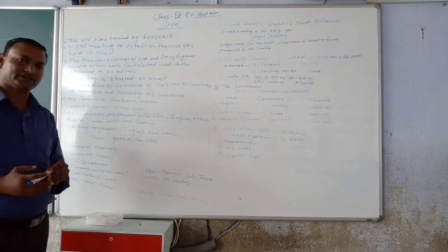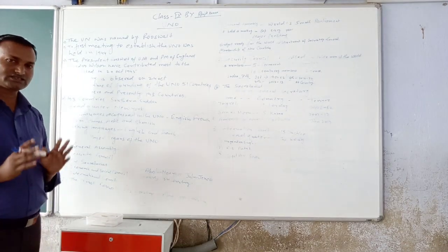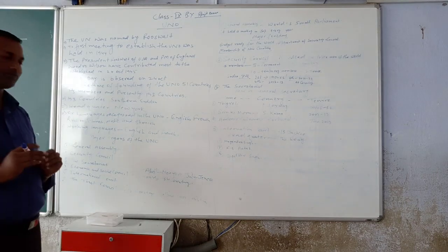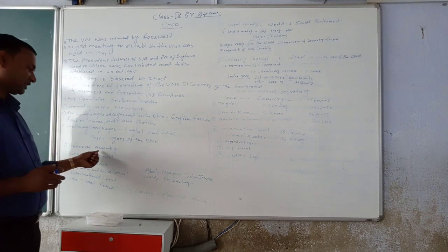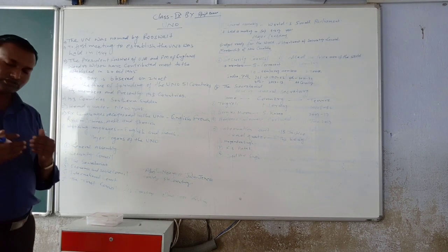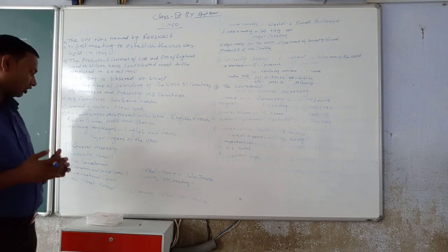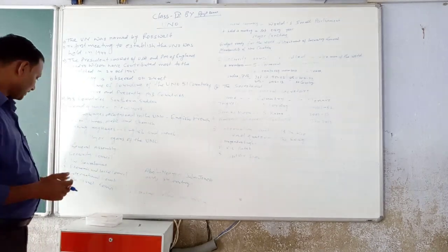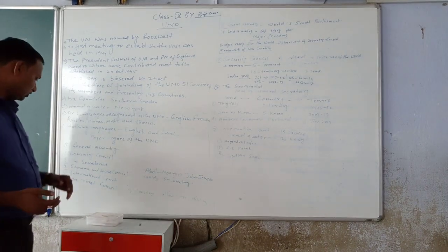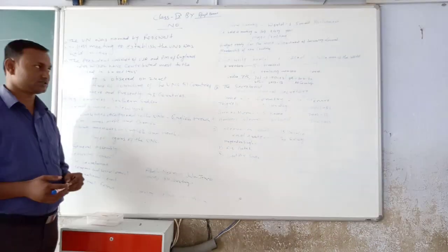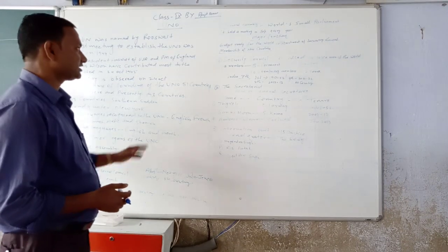Next, Major Organs of United Nations. There are six major Organs of United Nations. First, General Assembly. Second, Security Council. Third, the Secretariat and Fourth, Economics and Social Council. Fifth, International Court. Sixth, Trust Council. So, I will discuss one by one.